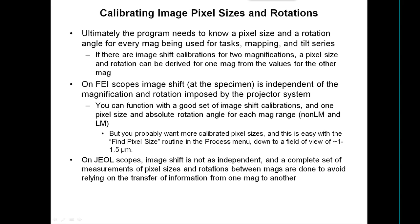The one tricky thing that really differs between the microscopes is calibrating image pixel sizes and rotations. For all the tasks, tilt series, and mapping we've shown, the program needs to know both the pixel size and the rotation angle of images on the camera for every magnification used. One nice thing is that if there are image shift calibrations at two magnifications and a pixel size and rotation for only one, it can derive pixel size or rotation for the other mag using the image shift calibrations.